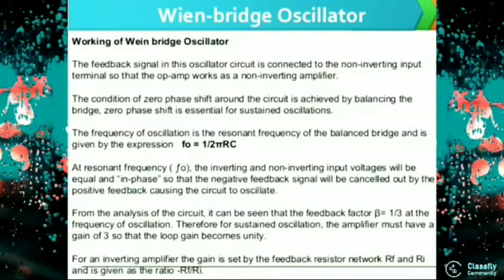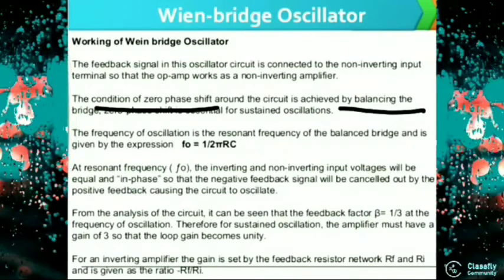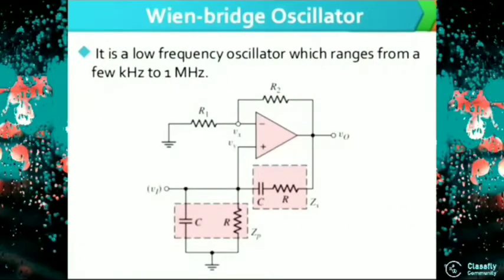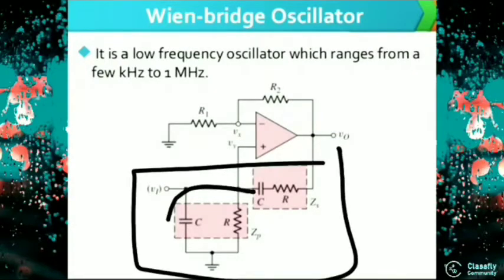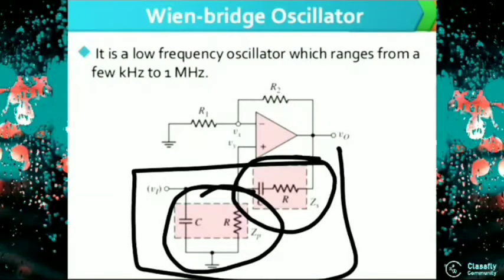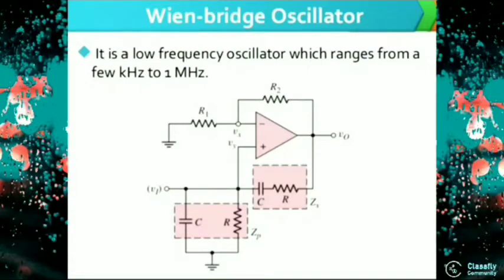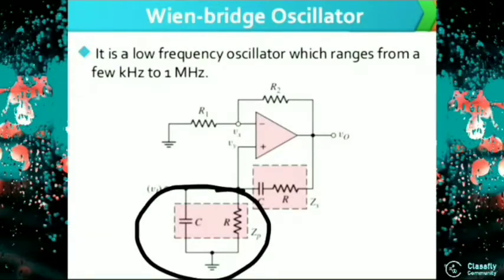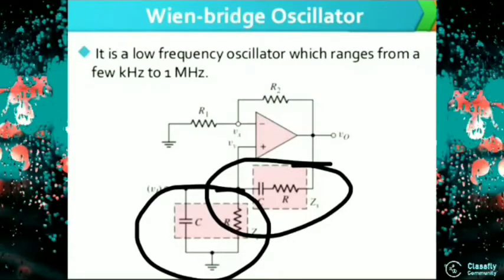The condition of zero phase shift around the circuit is achieved by balancing the bridge, and zero phase shift is essential for sustained oscillation. This bridge is the feedback part. The parallel RC will deal with the low frequency and the series RC will deal with the high frequency. If it receives thermal noise — meaning multiple frequencies — it will select neither the high nor the low, but the intermediate frequency.